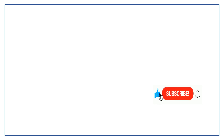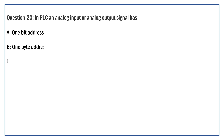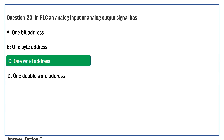In PLC, an analog input or analog output signal is having — Option A: 1-bit address. Option B: One-byte address. Option C: One-word address. Option D: One-double-word address. The right answer is Option C: One-word address. Yes, in PLC, any analog input or analog output is having a one-word address.